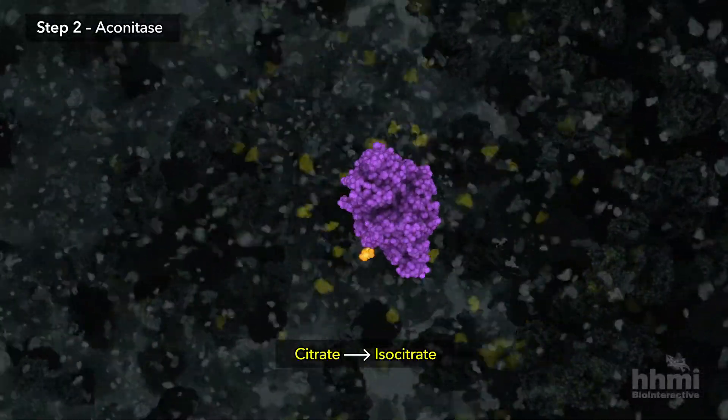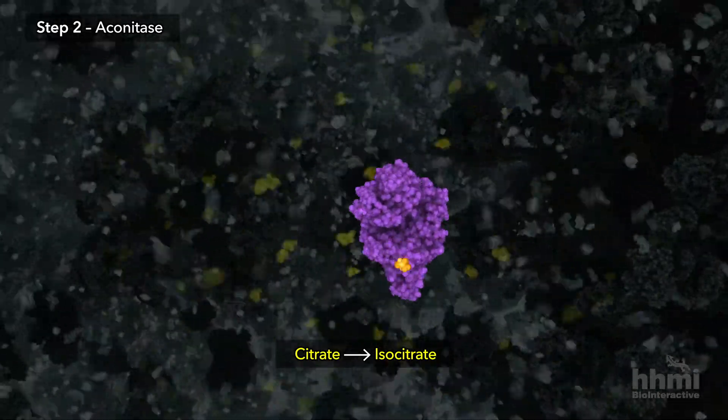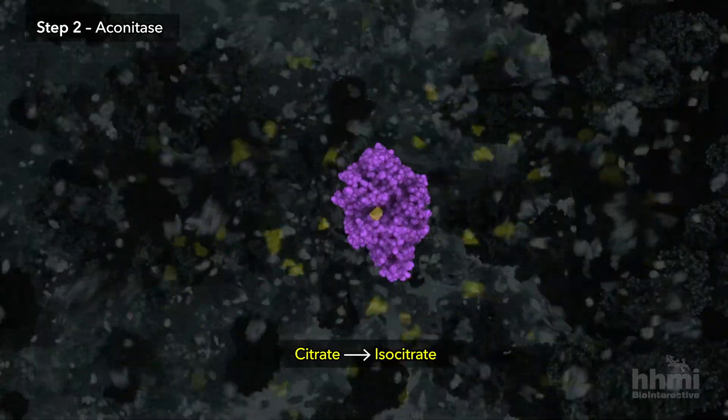The enzyme reaction of step two makes a small change to the citric acid molecule, moving the position of an oxygen atom, converting citrate into isocitrate.